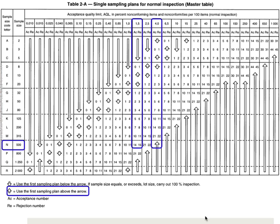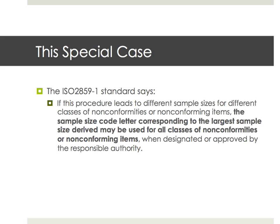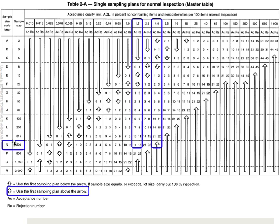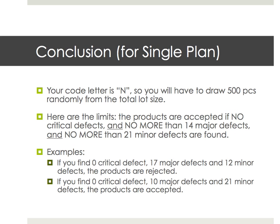You might wonder why we don't follow the arrow in the table, which says to use the first sampling plan above the arrow — in theory checking 315 samples. We're not abusing the standard because it states that if there are different classes of non-conformities, which is what we're doing with critical, major, and minor categories, it's fine to use the largest sample size for all classes.